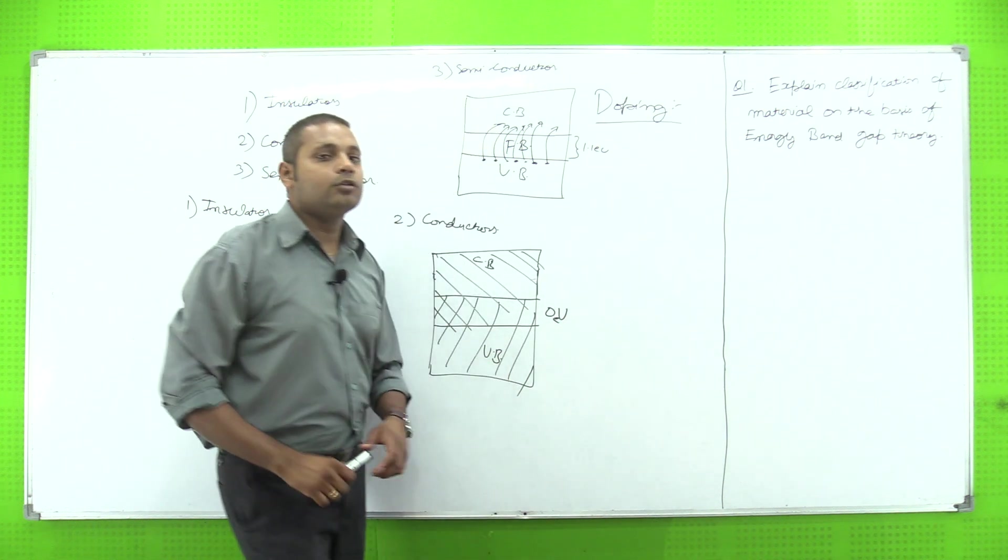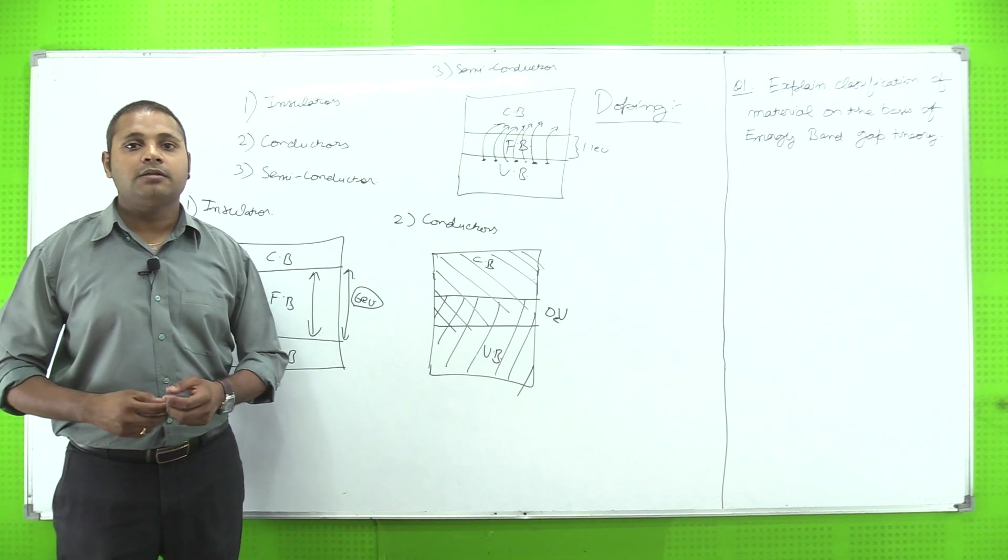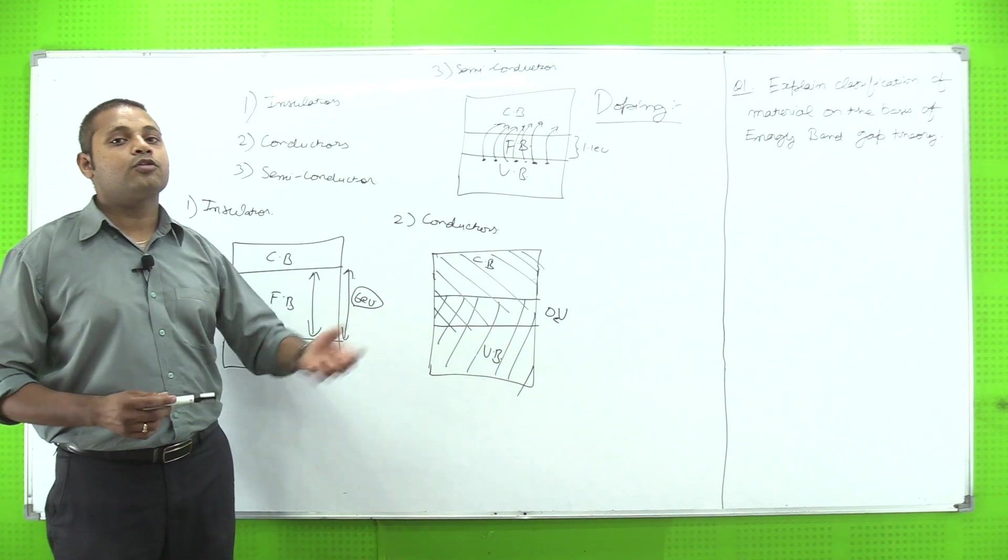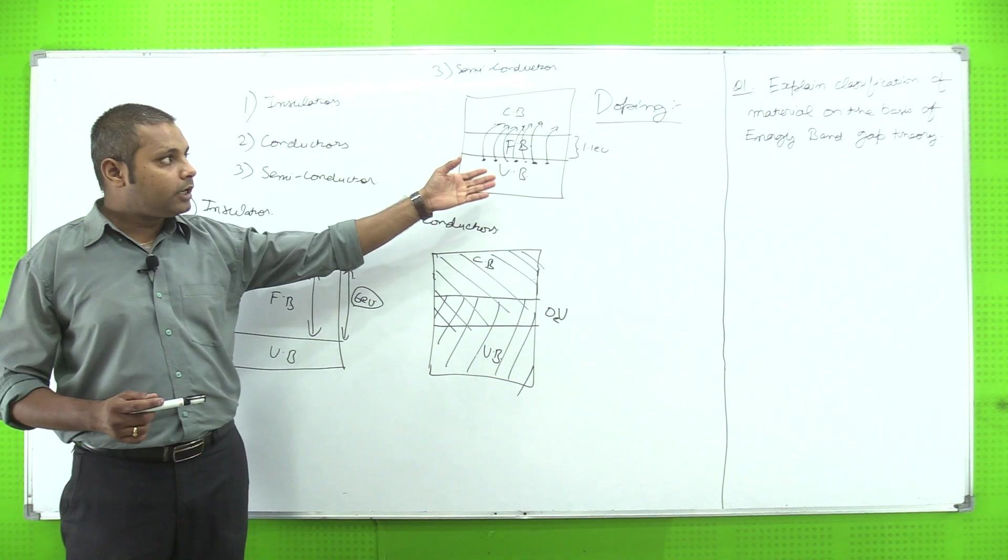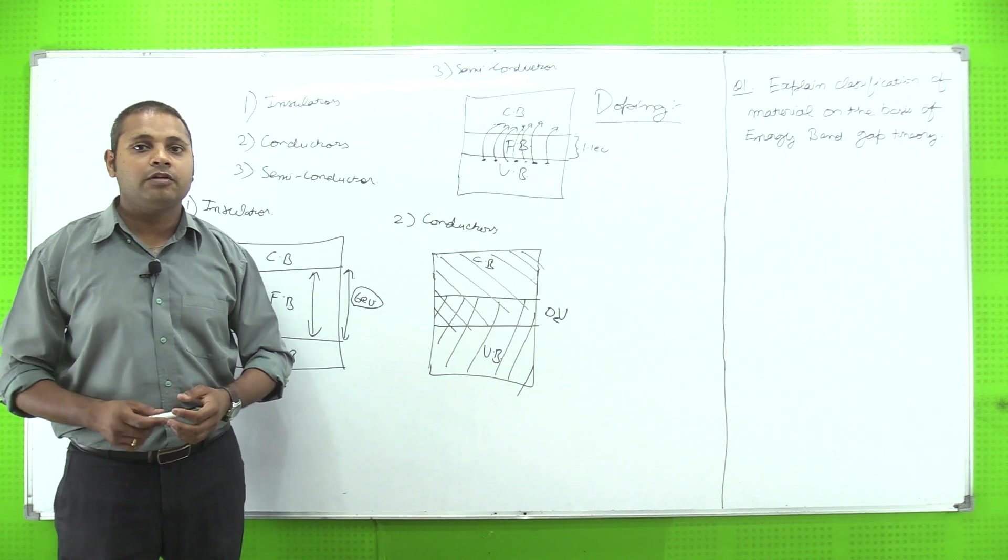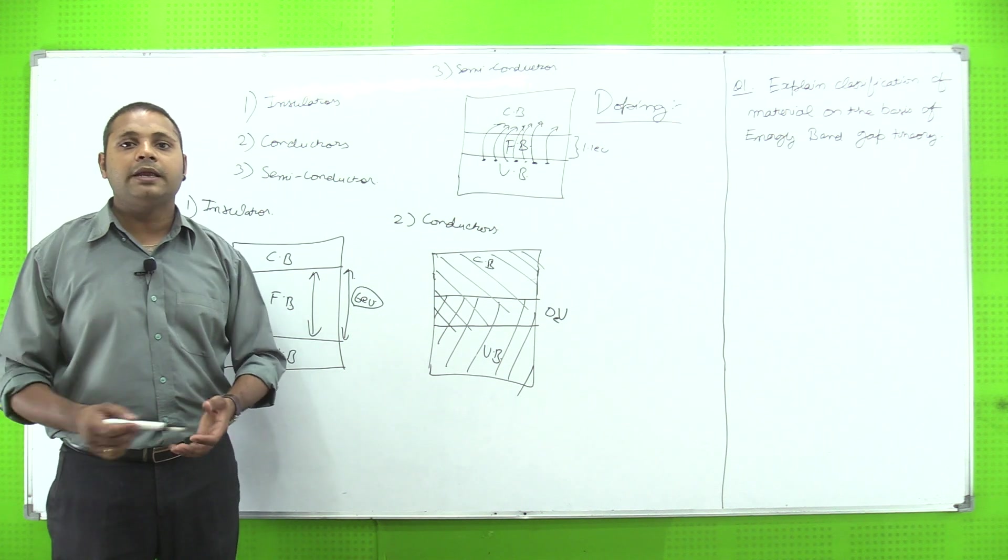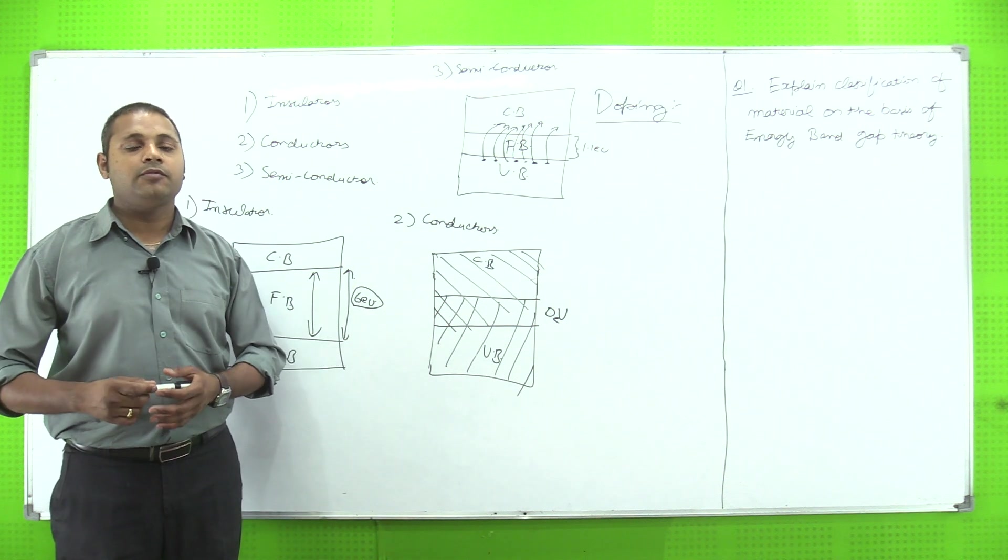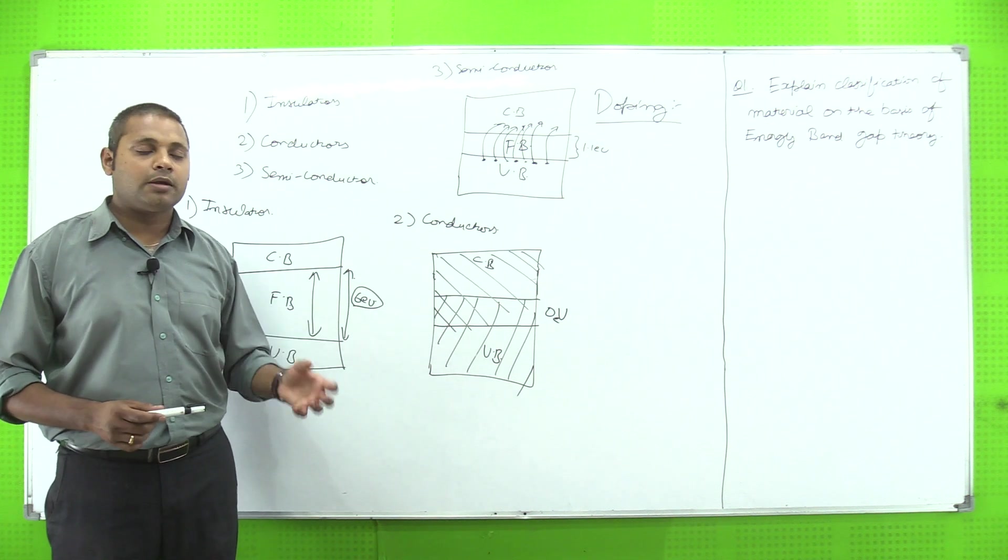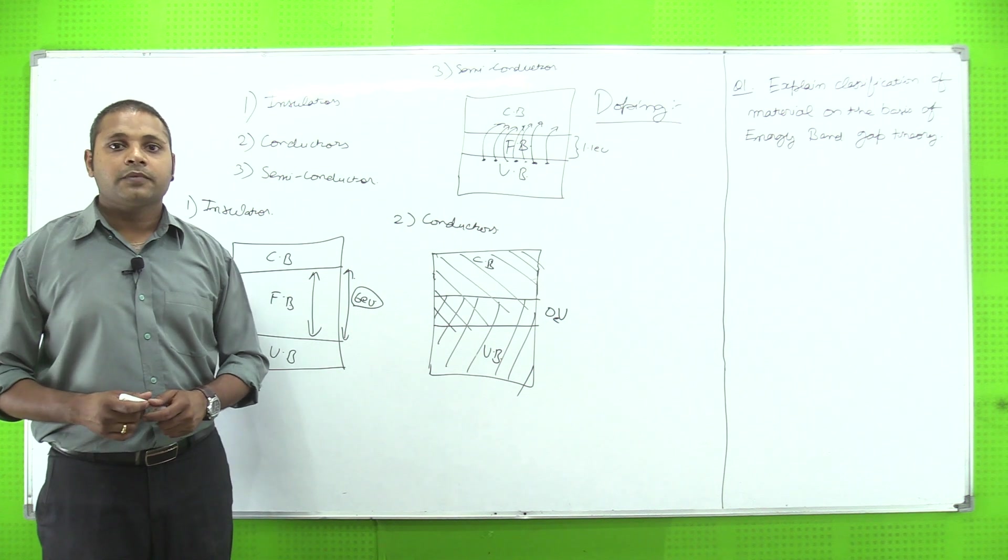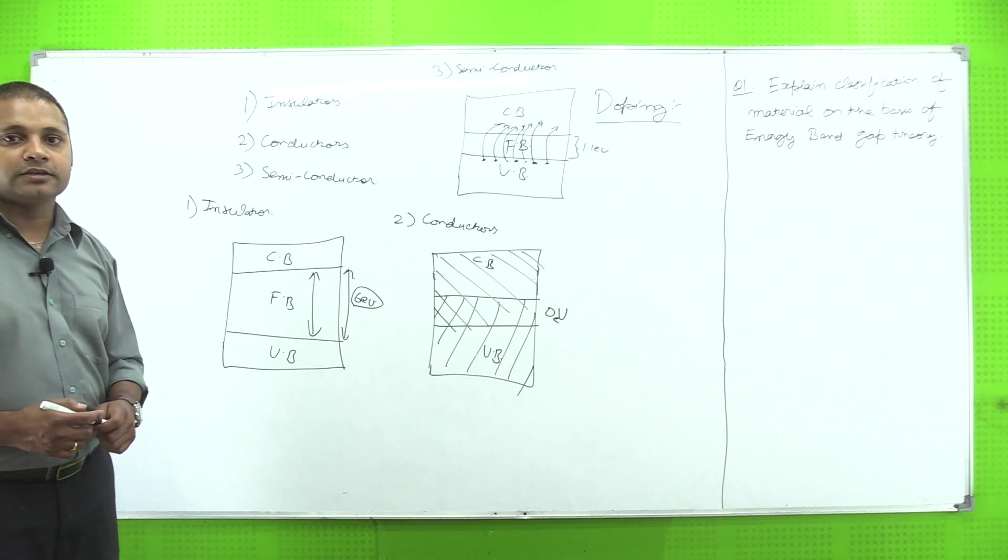Doping woh process hai jis mein hum apne semiconductor ko p-type ya n-type semiconductor banate hai. Agar number of electrons majority charge carrier honge, it will be an n-type semiconductor. And if holes are majority charge carrier, then it will be a p-type semiconductor. This is actually a part of doping. Doping - we have two types: n-type doping and p-type doping. Hum mein uske liye dopant add karna hota hai. We have dopant acceptor and donor impurities jo ki hum apne semiconductor, purest form of semiconductor mein add karte hai. This is all about the energy band diagram of material which exists in nature. Thank you.